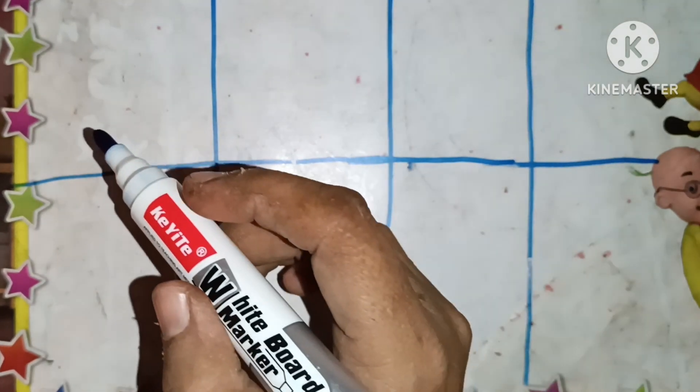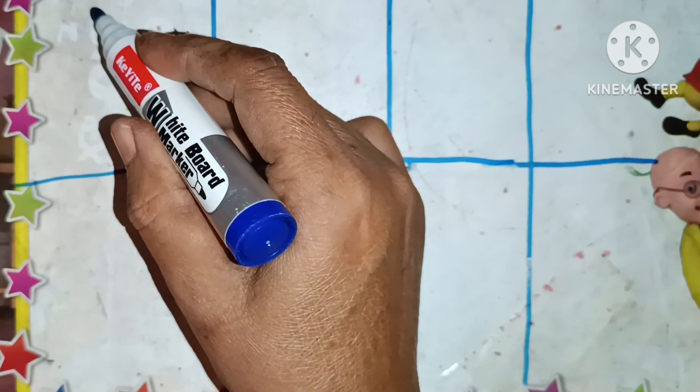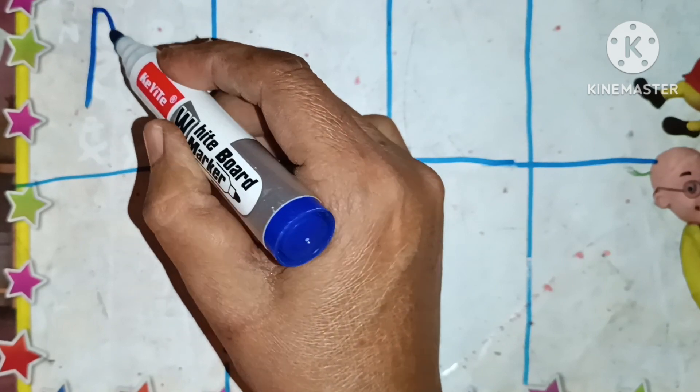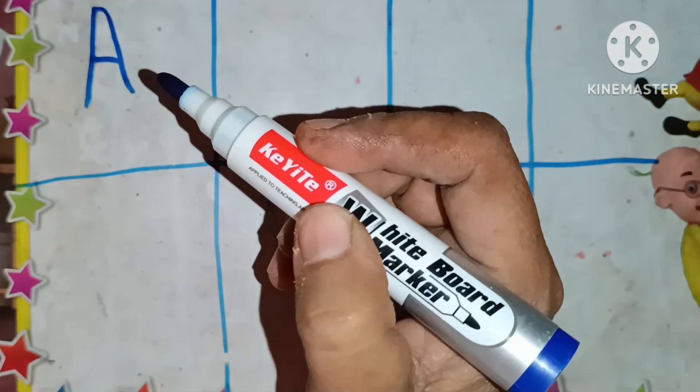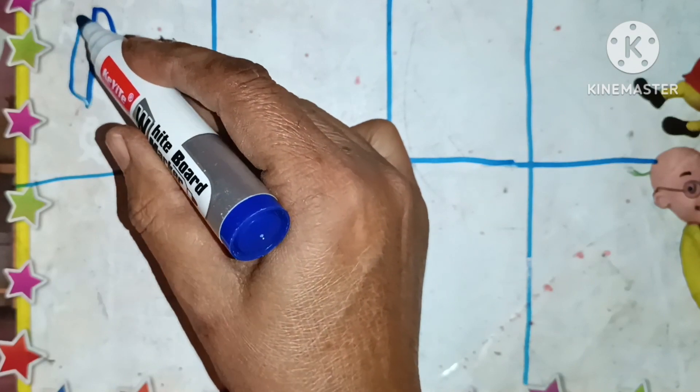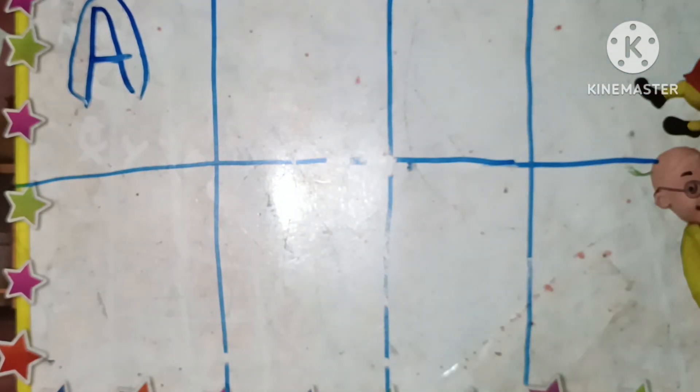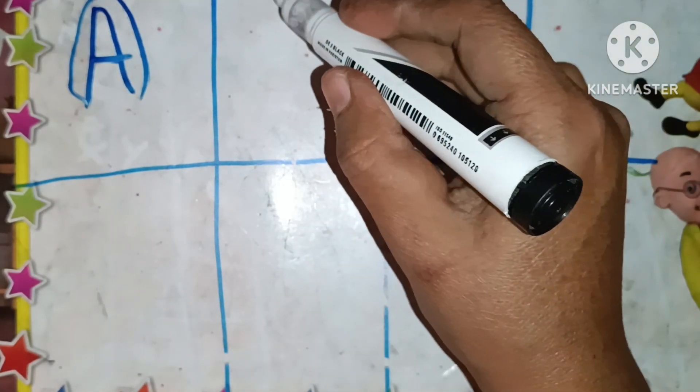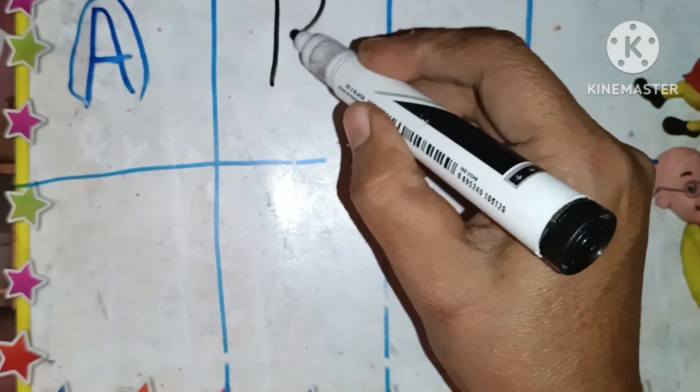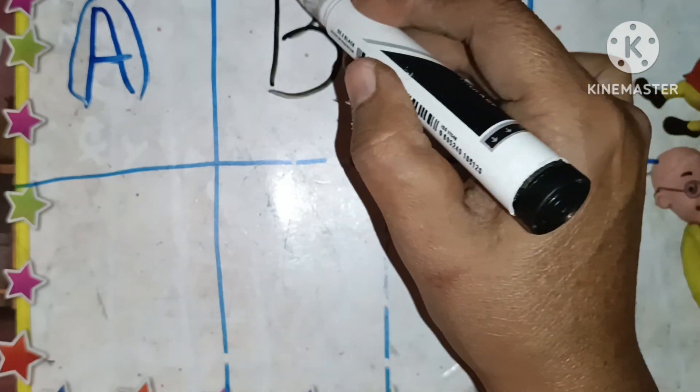Now we can start to write the ABC. A. A for apple. B. B for ball.